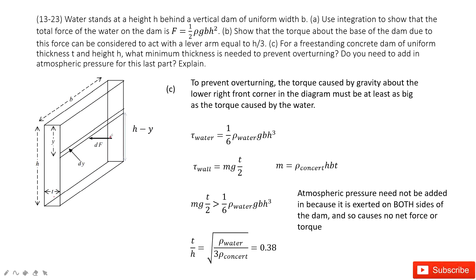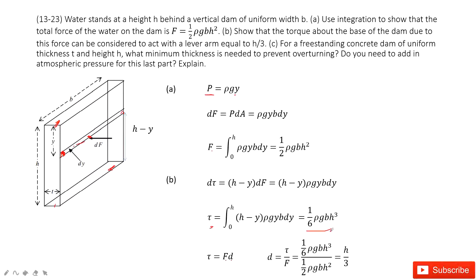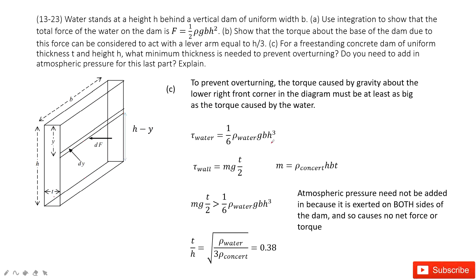Agreed. So to prevent overturning, the torque caused by the gravity of the concrete about the lower right front corner, this one, should be as big as the torque caused by water. So the torque by the water we just got there. We just got it there, so we write it there. And this all becomes the density of the water. And then now we look at the torque about the wall.